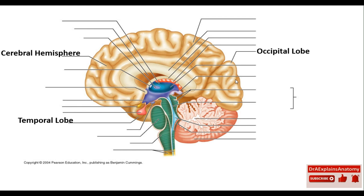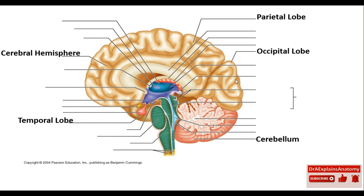We can see part of the temporal lobe right here. This is the parietal lobe. Anteriorly, we have the bones. This is the medulla oblongata. We can see part of the spinal cord. Keep in mind that the brain and the spinal cord belong to the central nervous system.